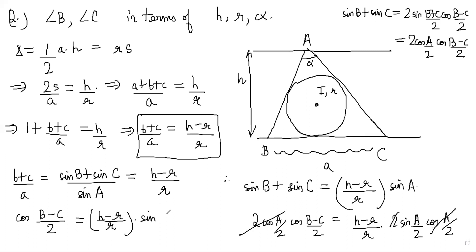The 2 cos(A/2) cancels from both sides. So we get cos((B-C)/2) equals (H minus R)/R times sin(alpha/2). Now we have a relationship between (B-C)/2 in terms of the variables we need: H, R, and alpha.